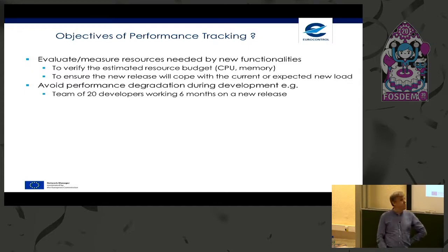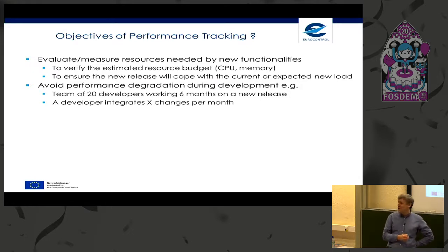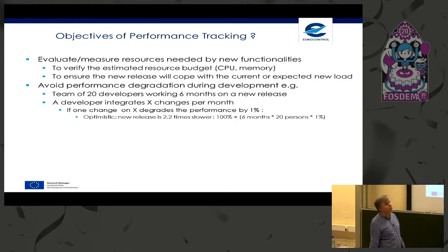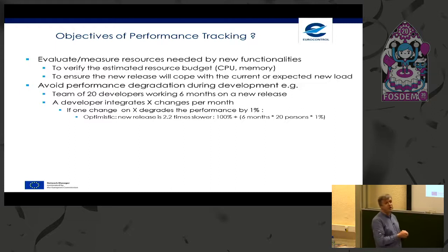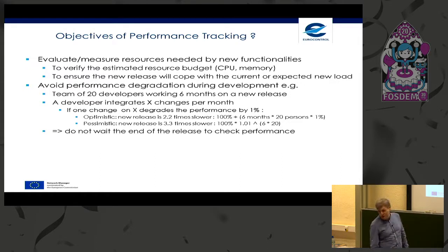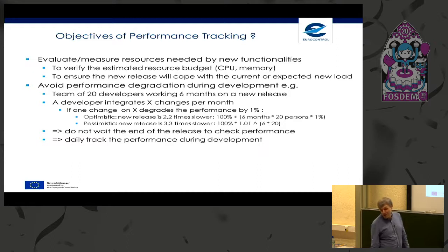Imagine we have a team of 20 developers working six months on a new release — about the size of the team working on this application. If each developer integrates X changes per month, and if one change in X degrades performance by one percent, then optimistically after six months we have a new release which is 2.2 times slower. The pessimistic view is that the new release is 3.3 times slower — starting from 100% times 1.01 to the power of 120.